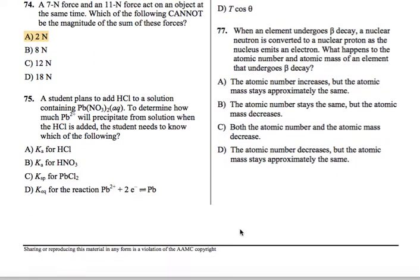75. A student plans to add HCl to a solution containing Pb(NO3)2 aqueous. To determine how much Pb2+ will precipitate from solution when HCl is added, the student needs to know which of the following. So A says the Ka for HCl. We actually know that HCl is a strong acid, so we don't really need a Ka for HCl. We know that it's going to dissociate completely.